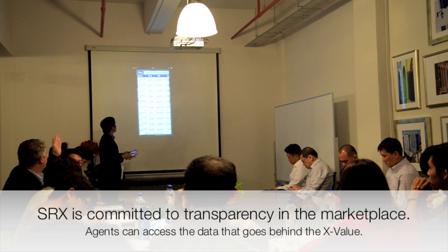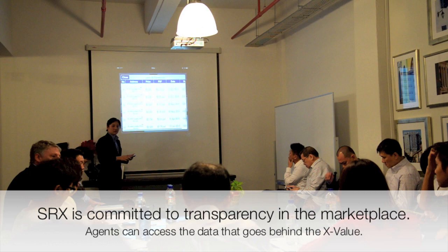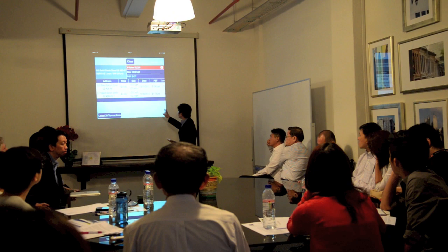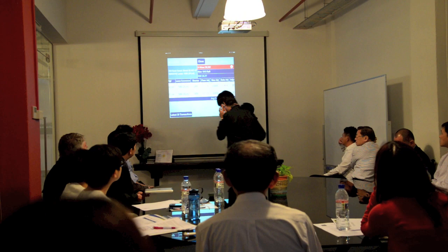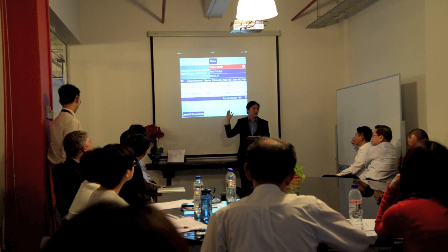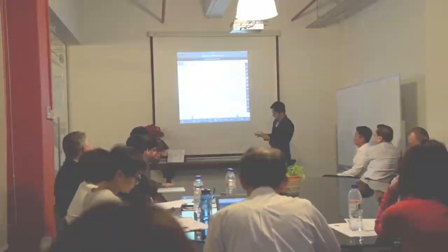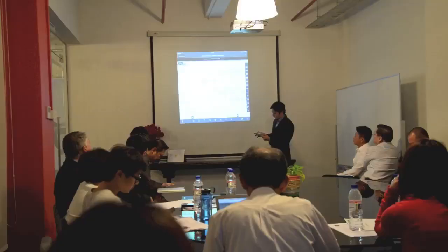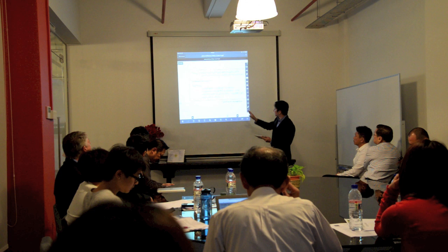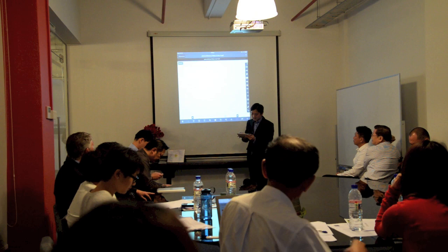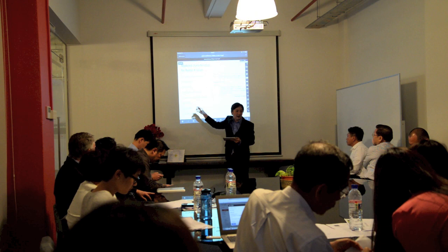We are very transparent, and I'll say it again — if you want to understand our index, just go to our website. Regarding how we adjust for size and floor factors: we use a hedonic regression model. We take all past transactions and put them into a multivariate regression technique called hedonic regression to control for all the various factors. The system calculates and isolates, for example, what premium applies for every single floor increase in a particular project.